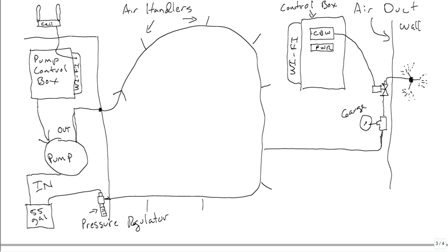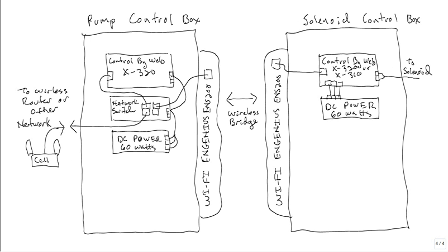Now this last picture here gives a little bit detailed control, details of the controls themselves. So here, this is the pump control box, this is back at the pump. This is the solenoid control box. We're not showing any piping at all here, we're just showing communications, electronics communications.